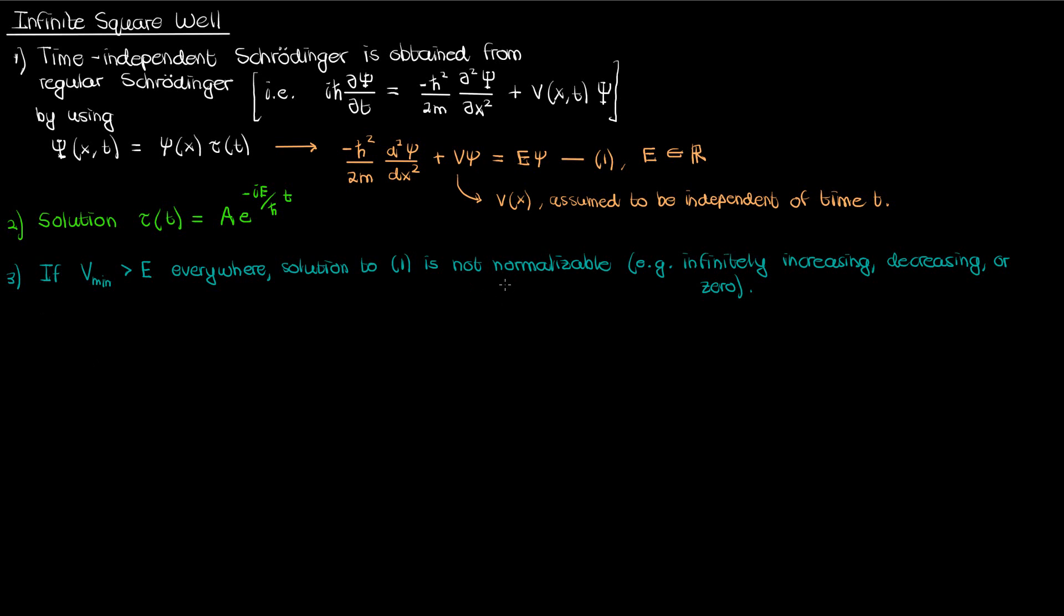I didn't really discuss the zero case previously but that's also possible since zero is still a valid solution to the Schrödinger equation. However psi equals zero is also not normalizable. And again by normalizable I mean that we can make the integral of the magnitude of small psi squared equal to 1.